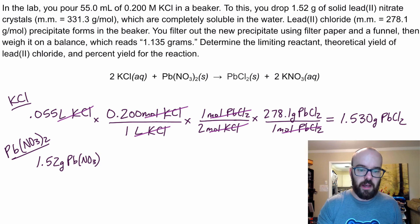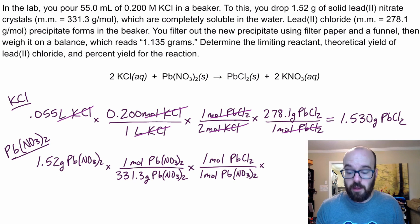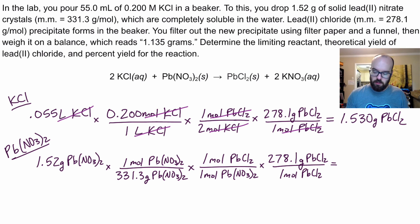So let's do lead nitrate. It gives us 1.52 grams of lead nitrate. We're going to use the molar mass of lead nitrate, 331.3 grams per mole. It's a one to one ratio to get to lead chloride for our moles. And then we use that 278 again. And at the end, we get 1.276 grams of lead chloride. And it turns out that is less. So we're going to run out of lead nitrate reactant as soon as we produce 1.276 grams of lead chloride product. This lead nitrate is our limiting reactant.